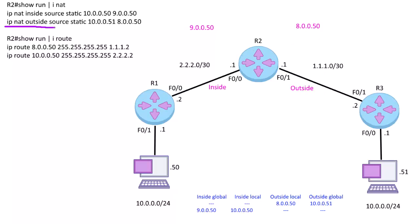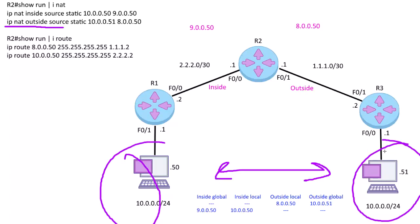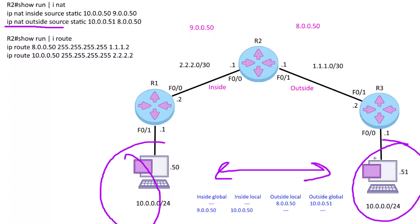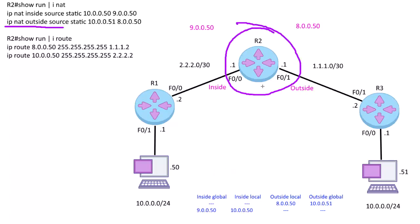The IP NAT outside command is handy when you have overlapping subnets. Let's say you integrated with a new company, you merged, and their IP addressing scheme overlaps with ours. What we can do is trick each side into thinking they're on different networks. The left side will be on the 9 network and the right side on the 8 network, and R2 is going to be doing all that NAT work for us.